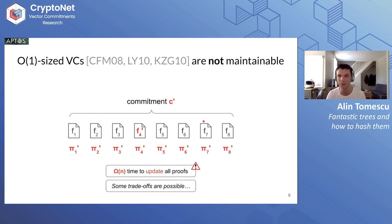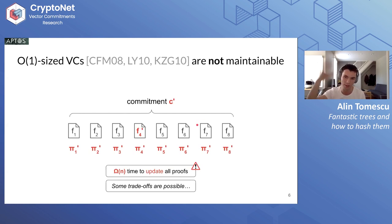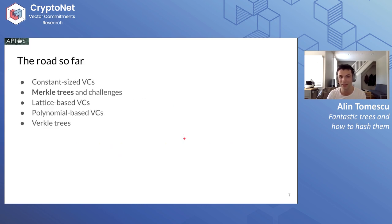I basically claim that constant-size VCs are not maintainable, and this is quite inherent. There are things you can do — Wei-Jie Wang talked about time-space trade-offs where you defer updates and only apply them when you serve the proof. But that's not suitable for applications where you want to serve proofs on the fly. This is why we prefer tree-based VCs.